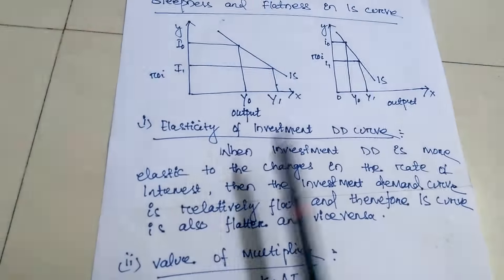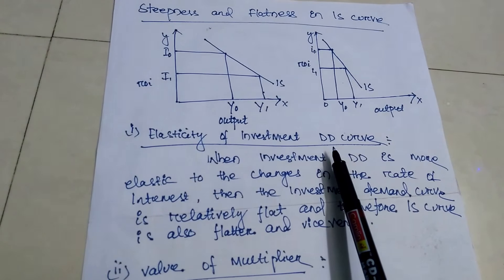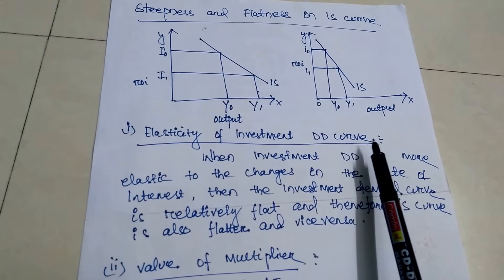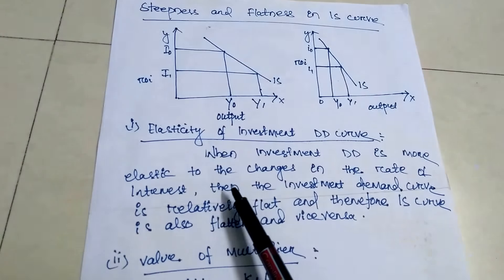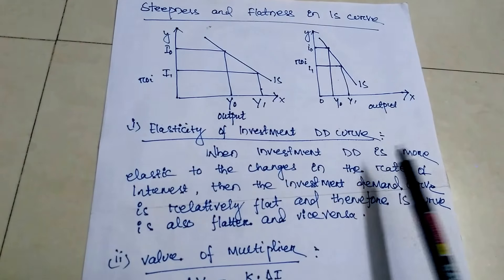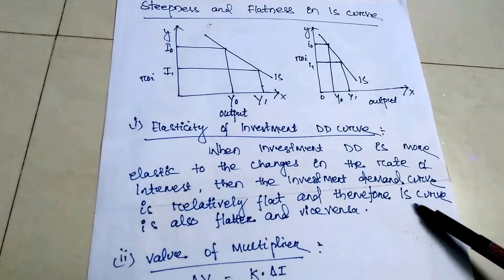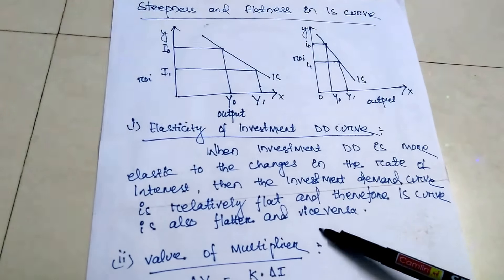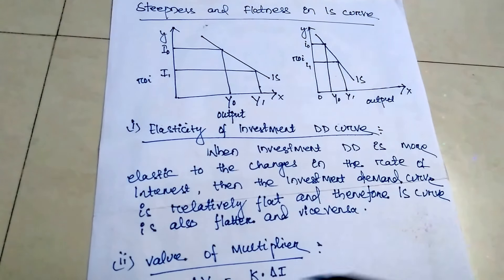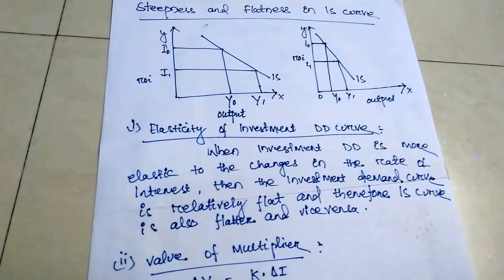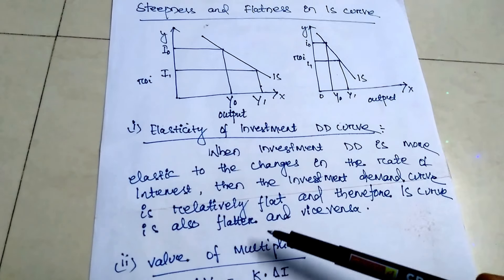The first reason is the elasticity of investment. According to the demand curve, when investment demand is more elastic to the change in the rate of interest, the investment demand curve is relatively flat, and therefore the IS curve is also flatter, and vice versa.